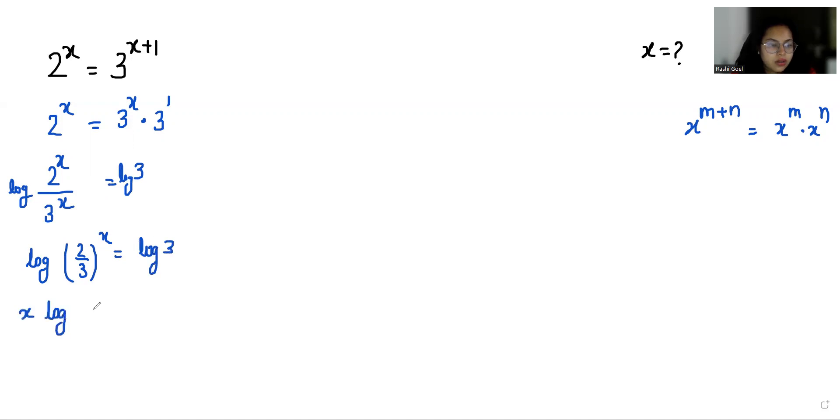So x log 2 by 3 is equals to log 3. According to log rule log a by b, we can write it as log a minus log b. So x times log 2 minus log 3 is equals to log 3.